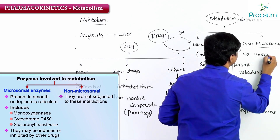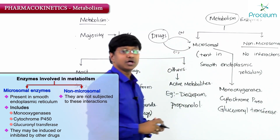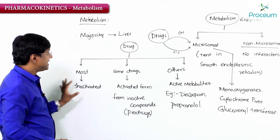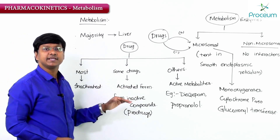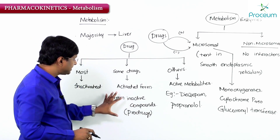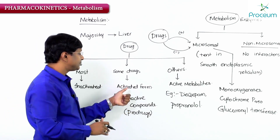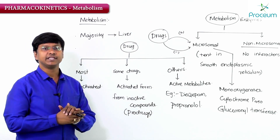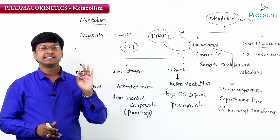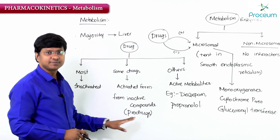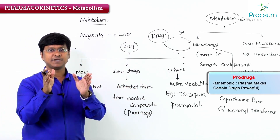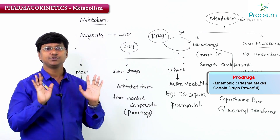Majority of the drugs once metabolized are converted into inactive form. Some drugs are converted into active compounds — those inactive compounds are called prodrugs. The mnemonic for prodrugs is: 'Plasma makes certain drugs powerful.'